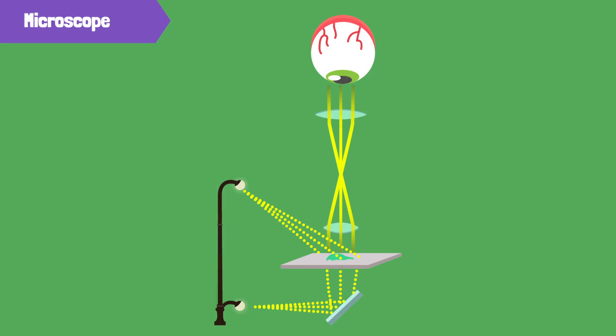There's a lens above the object, called the objective lens, and another lens near your eye, called the eyepiece.